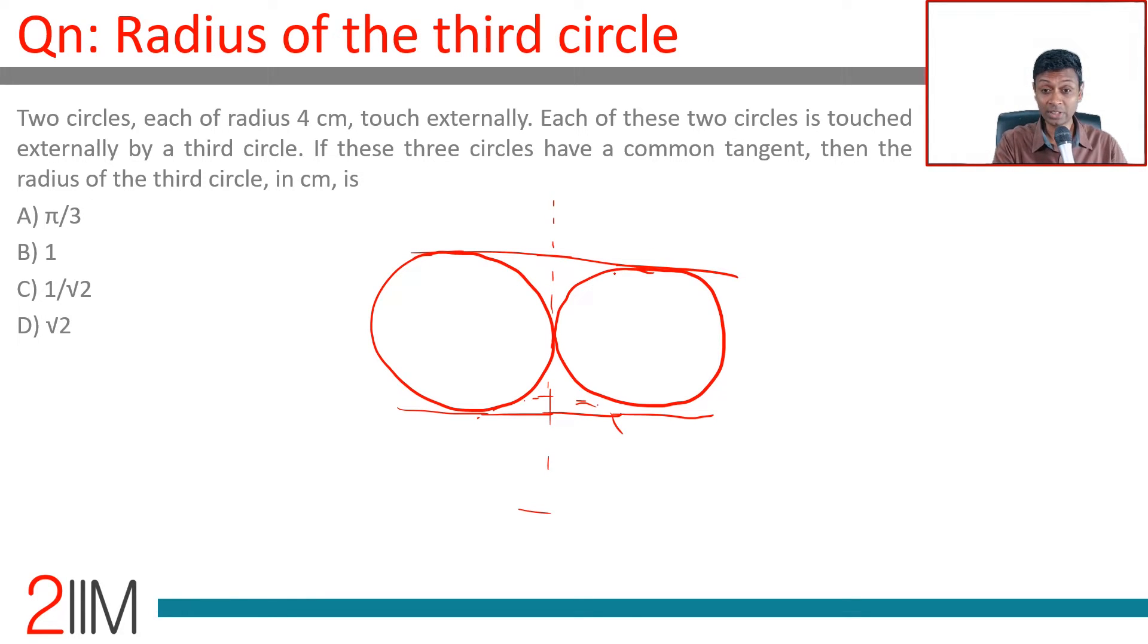Three common tangents. We have to draw a third circle for which one of these lines also happens to be a tangent. In other words, we are being asked to draw a circle like this. This line cannot be a common tangent to three circles - we cannot draw a third circle for which this will also be a common tangent and it should also touch the other two circles. That's not possible, and so the three circles have to be like this.